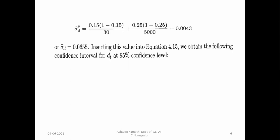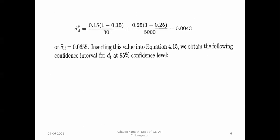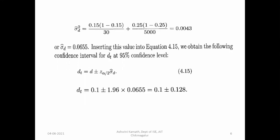Inserting this value into the equation, we obtain the true difference at a 95% confidence level. From the table discussed in the last class, at 95% confidence level, Z_{alpha/2} = 1.96.